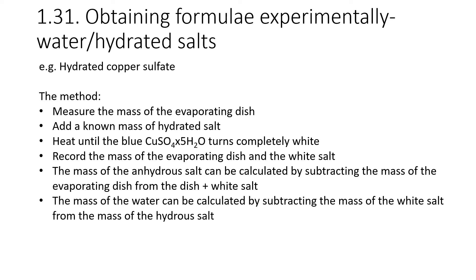In this case we use hydrated copper sulfate. When hydrated it's blue, but anhydrous copper sulfate is white. You heat the blue copper sulfate until it turns completely white — i.e. all the water has left — then record the mass of the evaporating dish, which should be less because we've lost water. The mass of the anhydrous salt is calculated by subtracting the mass of the evaporating dish alone from the mass of the dish plus the white salt. The mass of water lost is the mass of the hydrated salt minus the mass of the anhydrous salt.